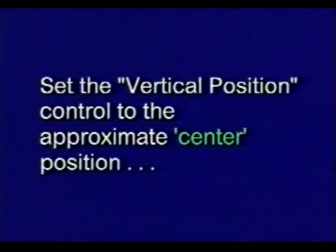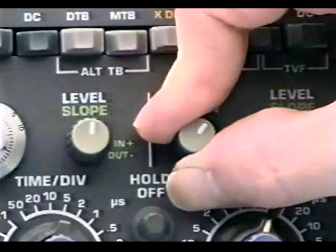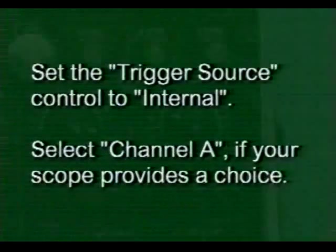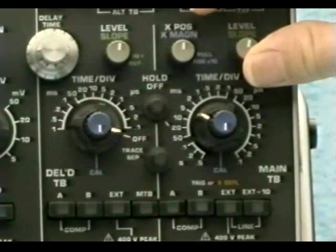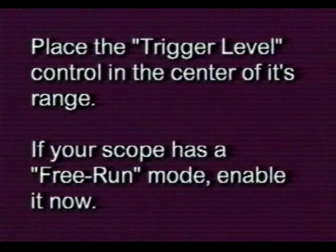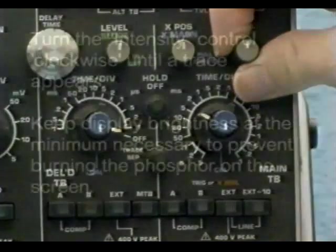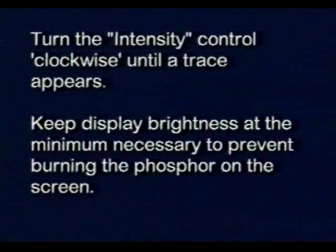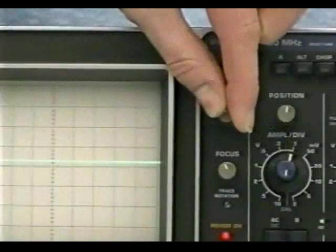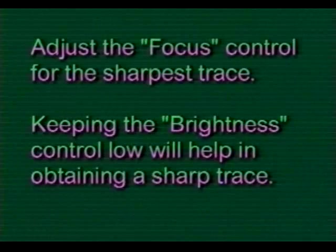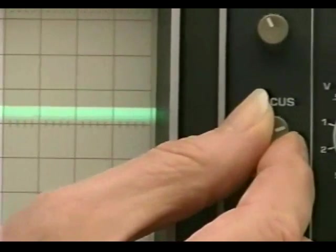Set the vertical position control to the approximate center position. Set the trigger source control to internal, and if your scope provides a choice, select channel A. Select positive trigger slope. Place the trigger level control in the center of its range. If your scope has a free run mode, enable it now. For DC measurements, this setting is not critical. Turn the intensity control clockwise until the trace appears. Keep the display brightness at the minimum necessary to prevent burning the phosphor on the screen. Adjust the focus control for the sharpest trace.